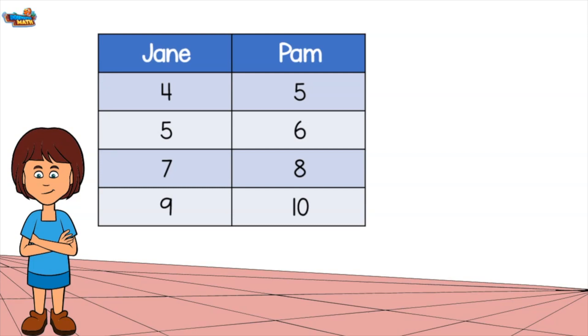First, we start by determining the rule. I want to determine how many years older Pam is than Jane. I need to add 1 to Jane's age to get Pam's age. Let's make sure we are correct by checking the second row. I add 1 to 5 and it equals 6. That is correct.